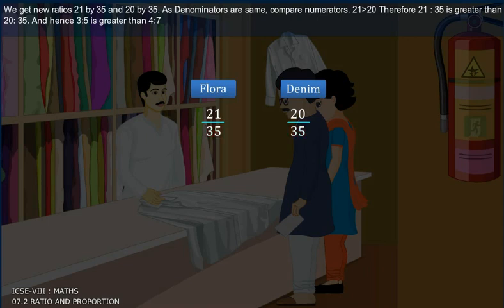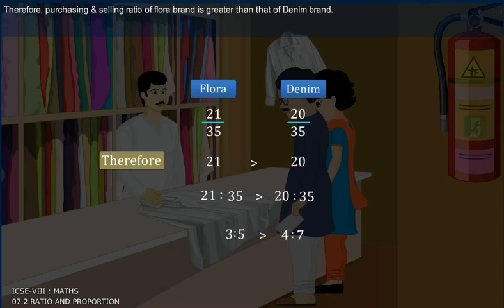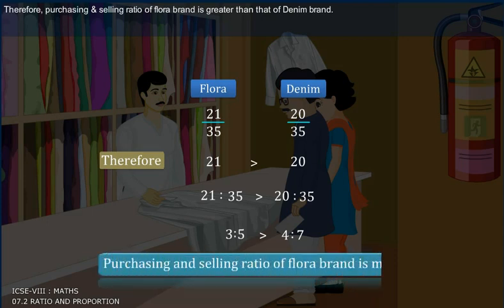As denominators are same, compare numerators. 21 is greater than 20. Therefore, 21 is to 35 is greater than 20 is to 35. And hence, 3 is to 5 is greater than 4 is to 7. Therefore, purchasing and selling ratio of flora brand is greater than that of denim brand.